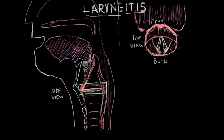You can see structures like the tongue, the jaw, the nose, and the nasal passage up here. Back here is the esophagus, where all the food goes, and over here is the windpipe. This little flap hanging off is the epiglottis, which is important for when we swallow so we don't get food in the windpipe — it bends over and protects the airway.